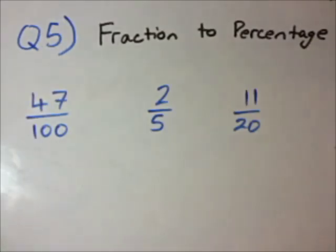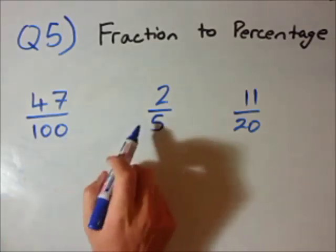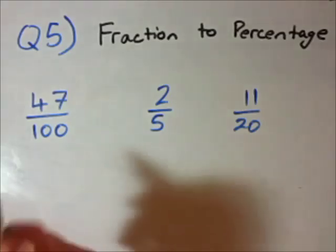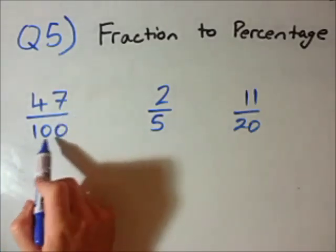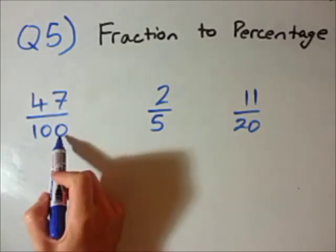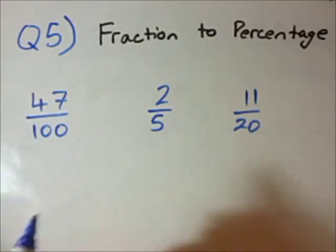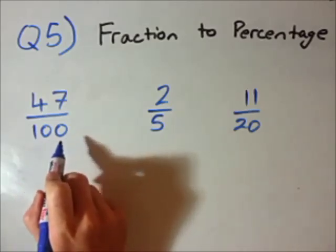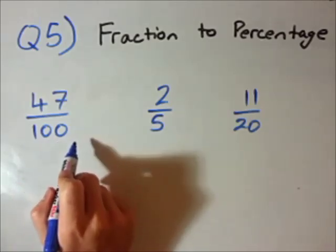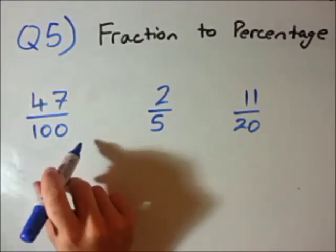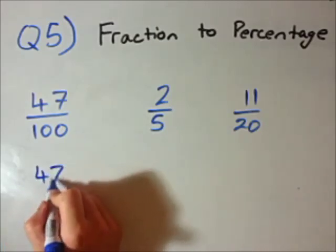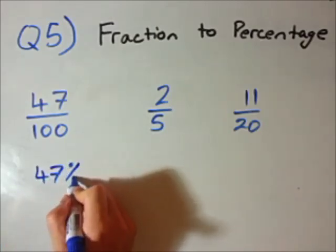Question five is pretty much the opposite of question four. We're now converting these fractions into percentages. And I'll use the maths exam example again. So for this maths exam out of 100 I got 47 out of 100. Now the key to all of these questions is your denominator in the fraction needs to be 100 to make it easy for yourself. And you'll see why now. This one is already 100. So I can simply say as a percentage 47 percent.